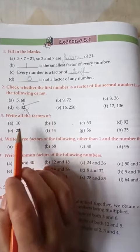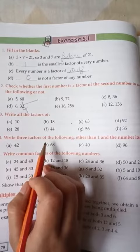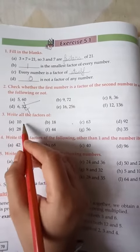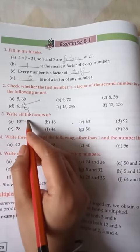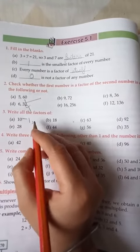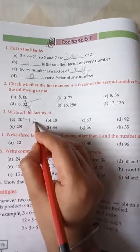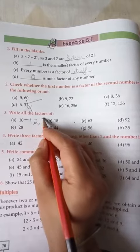Now come to question number 3. Write all the factors of 10, 28, 18, and 14. You have to write all the factors, understood? 1 is a factor of all numbers, understood?